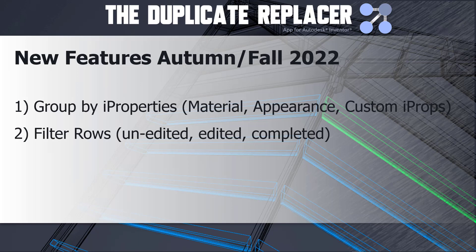Secondly, a super simple tool for showing you which groups of duplicate parts are completely unedited, which of those are work in progress, and which of those groups are completed - i.e. you've done all the replacements that you want to do and there's only a single part file represented in those groups. So it's very handy if you want to do replacement of duplicate parts in phases, maybe you want to save the model and come back to it.